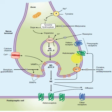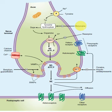Now let's look at drugs that can block the synthesis, storage, or termination of action of these neurotransmitters. Starting with synthesis: when tyrosine is converted into dopamine, a drug called methyrosine will inhibit the enzyme tyrosine hydroxylase, thereby inhibiting the formation of norepinephrine.